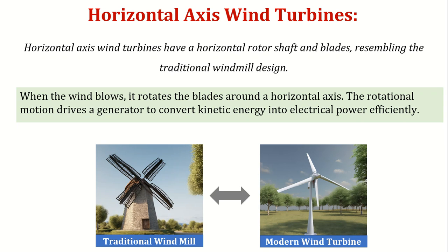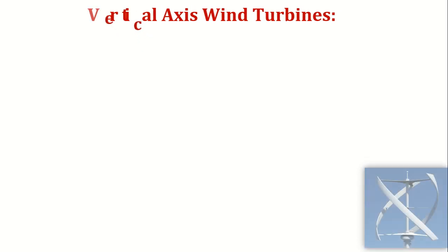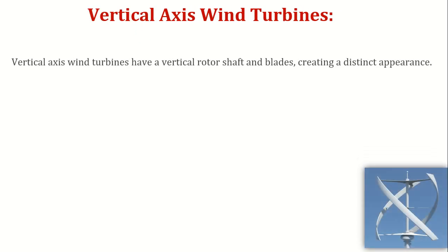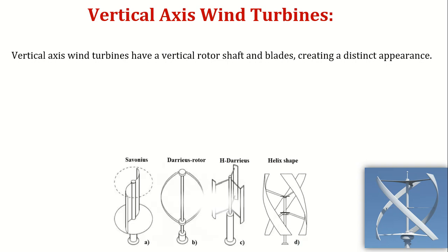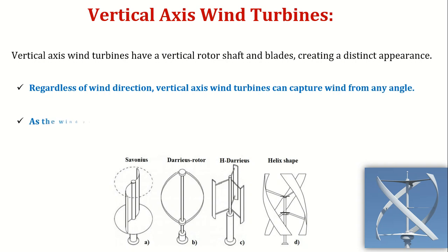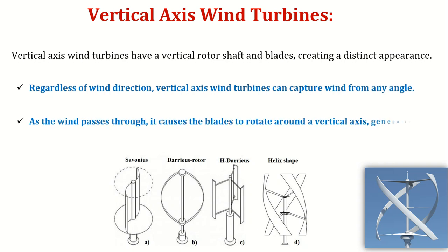Next is the vertical axis wind turbine. These turbines have a vertical rotor shaft and blades, creating a distinct appearance. In the image, you can see different designs of vertical axis wind turbines. Regardless of wind direction, vertical axis wind turbines can capture wind from any angle. As the wind passes through, it causes the blades to rotate around a vertical axis.